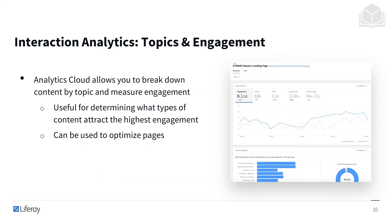Next, topics and engagement. Analytics Cloud allows you to break down content by topic and measure engagement. It's useful for determining what types of content attract the highest engagement and can be used to optimize pages. For Livingston Hotels & Resorts, I might find that for a particular use case, skiing scores way higher with a certain demographic — and that is going to inform my content strategy moving forward.